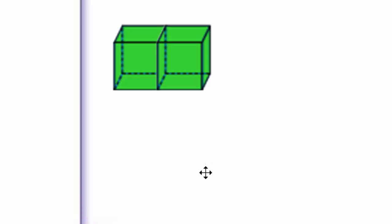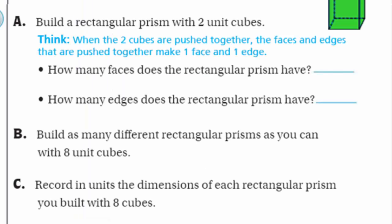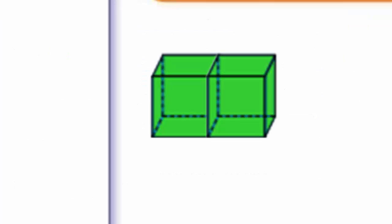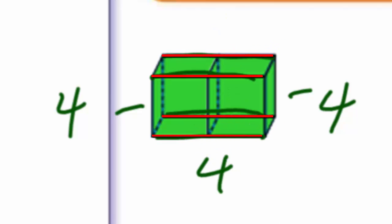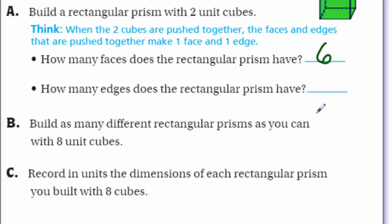That's what they mean by it makes one face and one edge — the edge goes all the way across. The rectangular prism still has six faces, the same as one cube. Now how many edges does it have? We still end up with 12 edges: four over here, four on the other side, and four going this way. That black line in there doesn't count, so we end up with 12 edges.